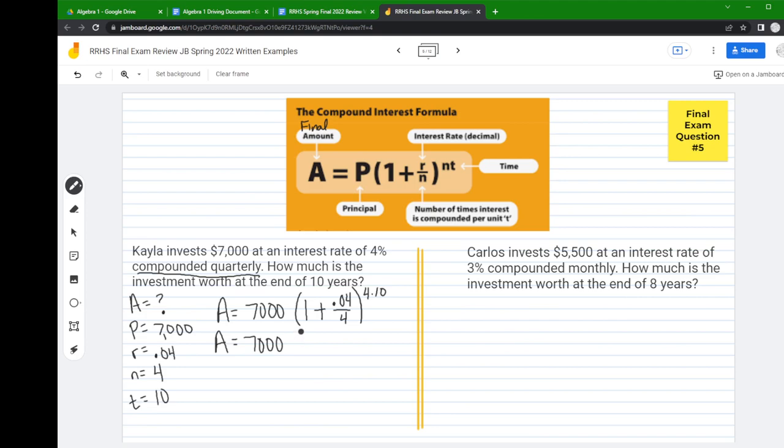To clean up: 0.04 divided by four is 0.01, and if you add one to that, you get 1.01. In the exponent, four times ten is 40. Now this is in a form I could plug into my calculator.